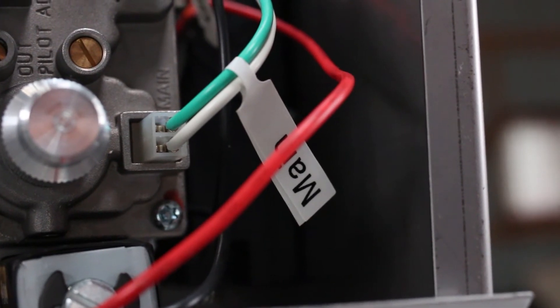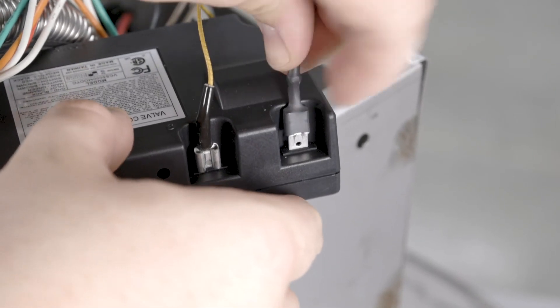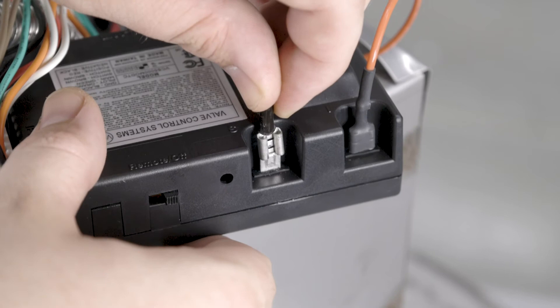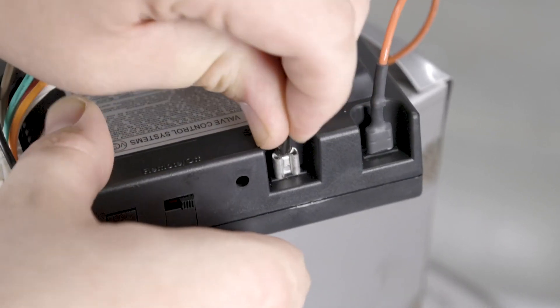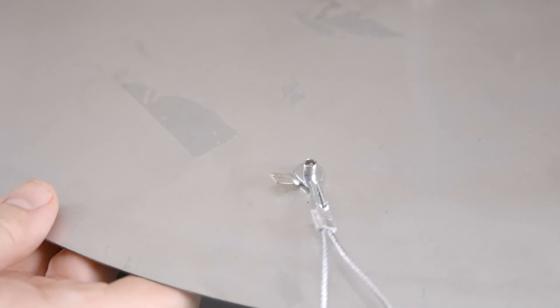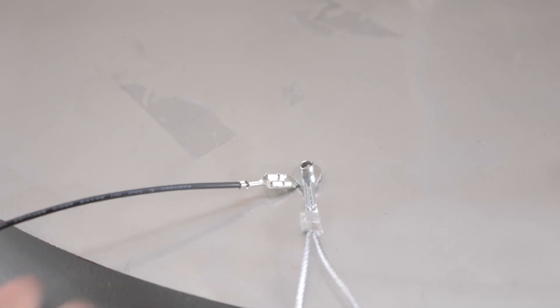Verify the lead from igniter on electrode assembly is connected to the I terminal on the module. Verify the lead from flame sensor on electrode assembly is connected to the S terminal on the module. Verify that the black ground lead from the module is connected to a proper ground on the appliance.